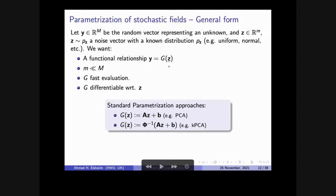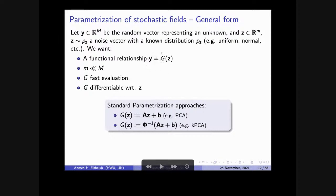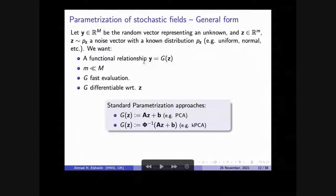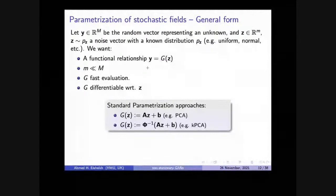Usually we feed in what's called Z, which is a standard normal variable. If we want to generate images, Y will be an image from the geological pattern. We have to obtain this complicated G function — a non-linear, complicated function where we feed it some noise to generate realizations from it. Then we should be able to judge if this Y is a valid sample or not. This is, I hope, the most simplified way to explain what a generator is.